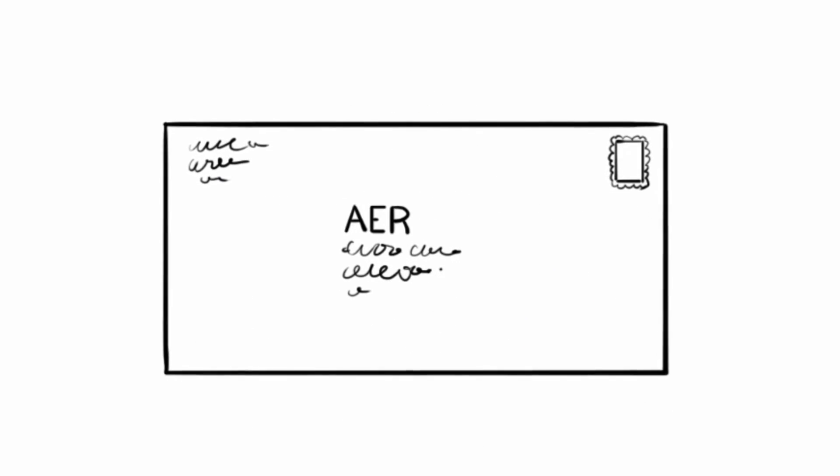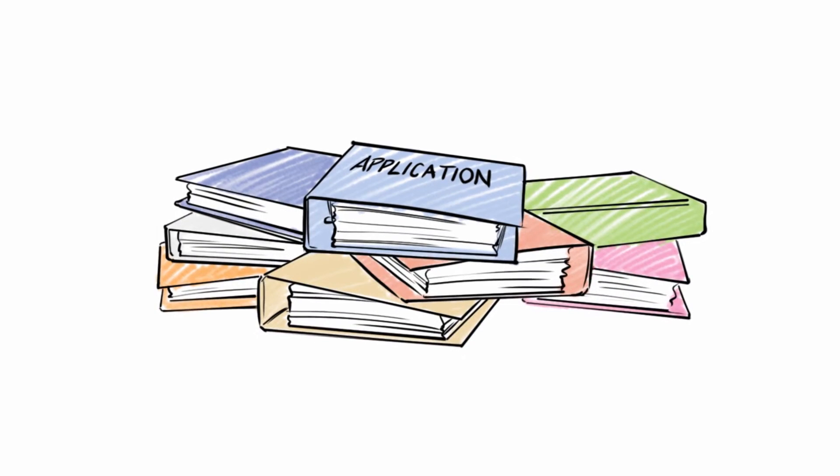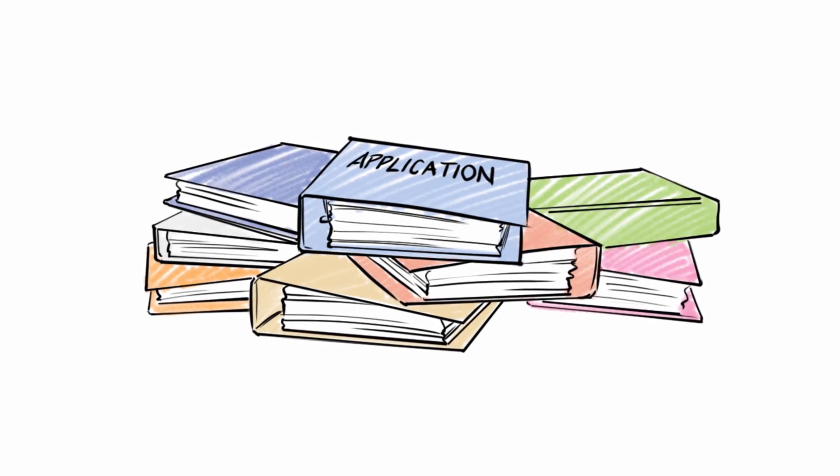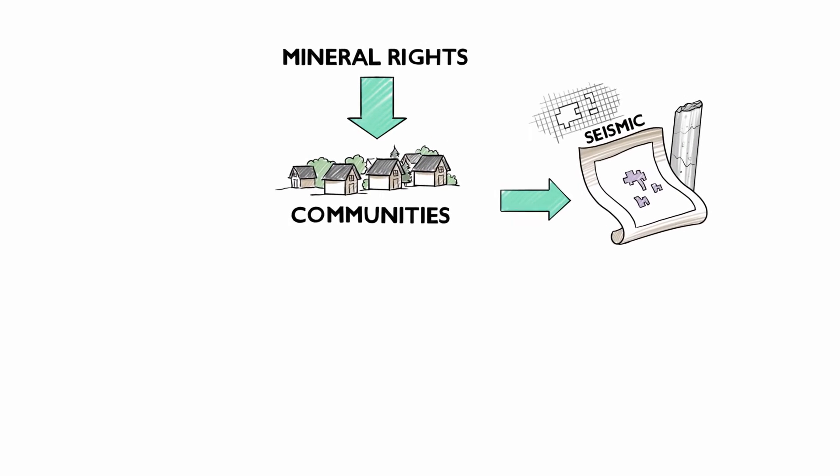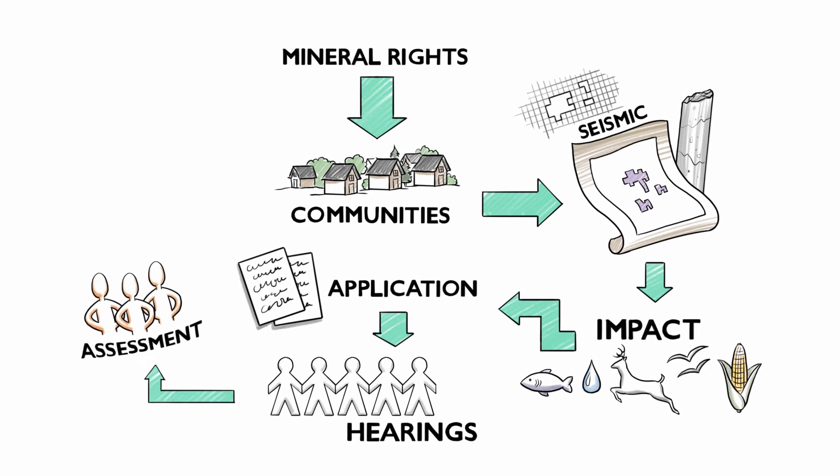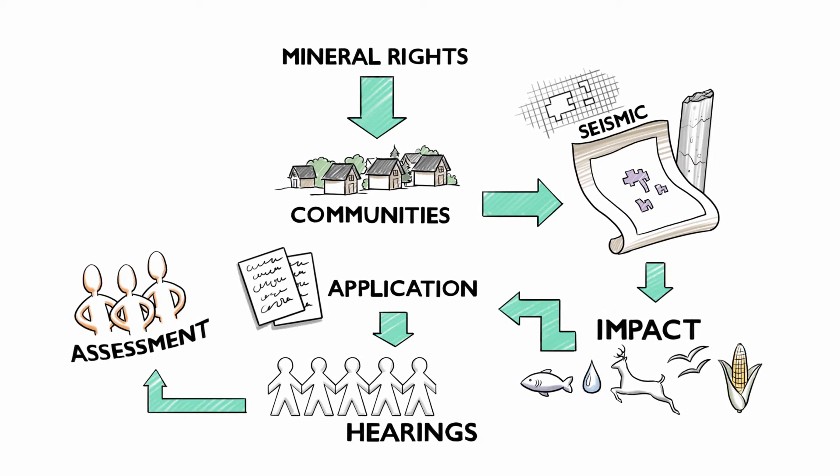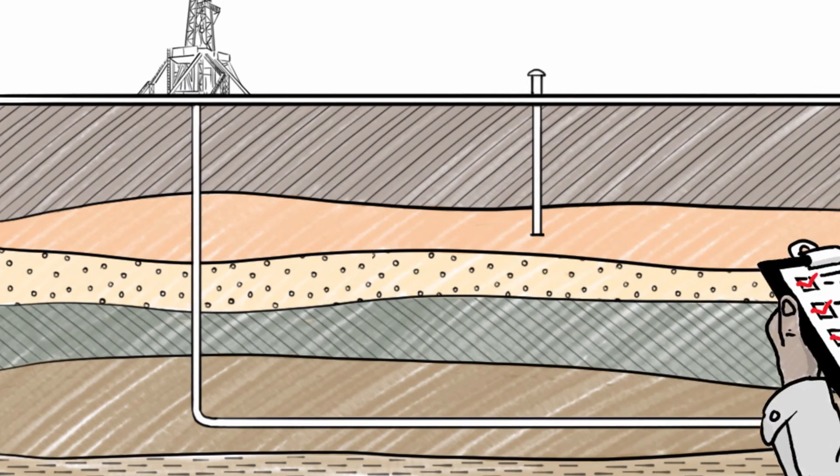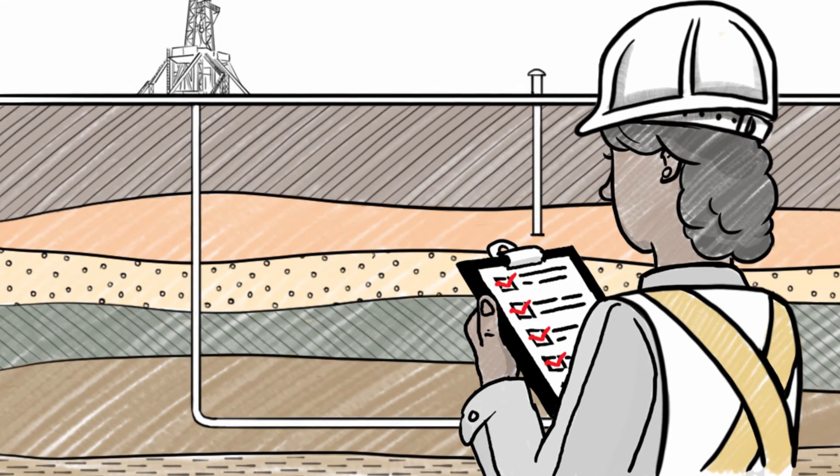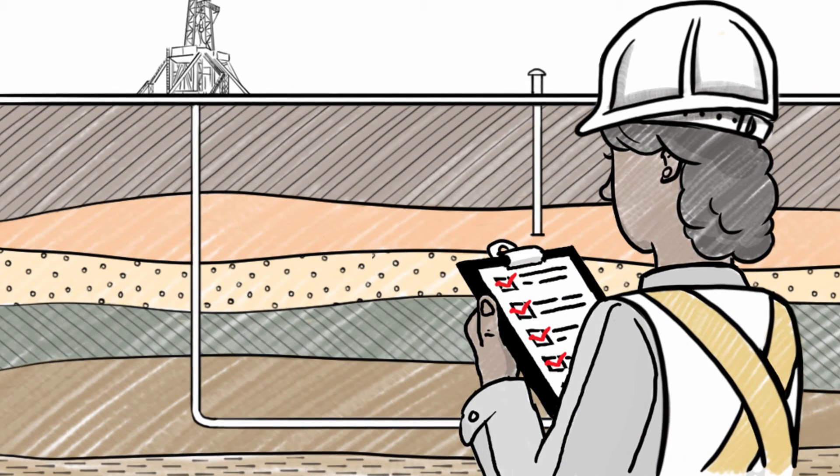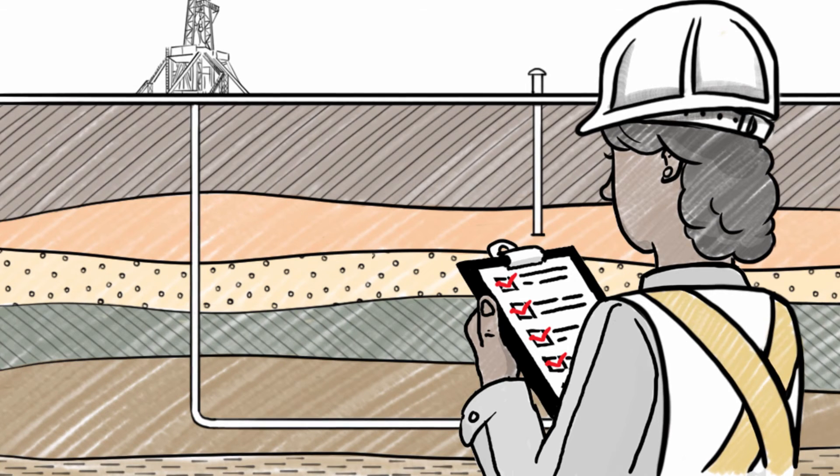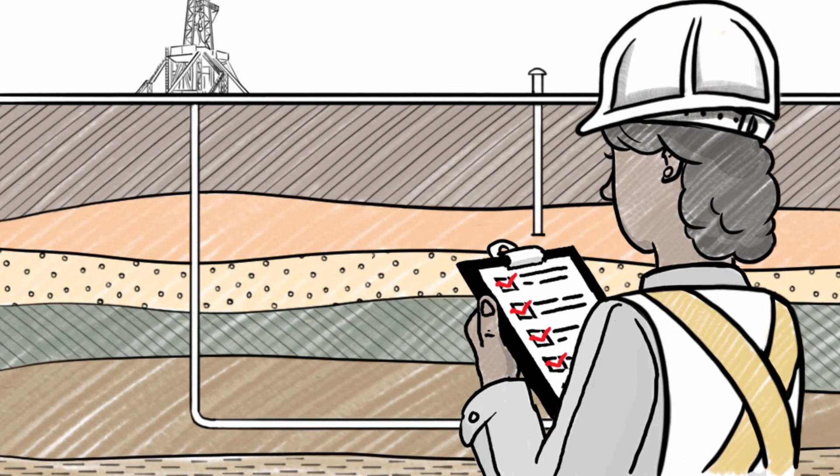The AER then reviews the project, which can take several months to complete and sometimes involves public hearings. If the AER determines that all application requirements have been met, it will issue an approval, or an approval with conditions. And their job doesn't end there. Once the project starts, the AER will carry out inspections during construction and operation to make sure all the rules are followed.